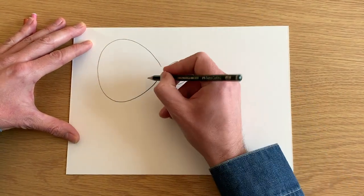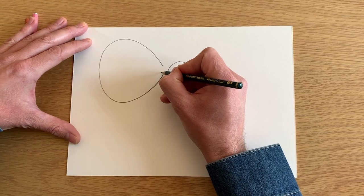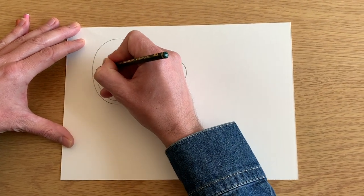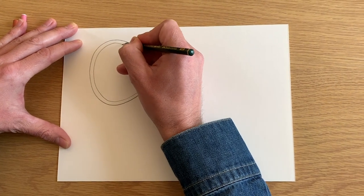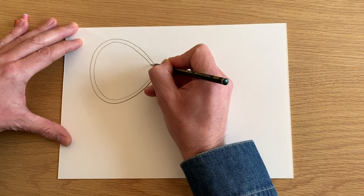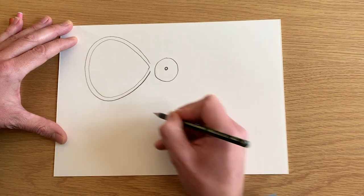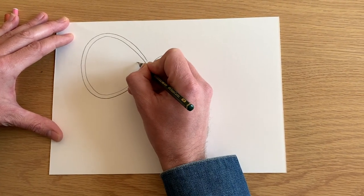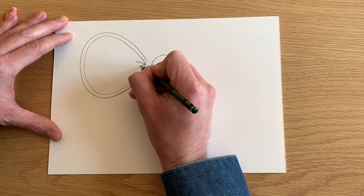And you're going to do the same again but make it a little bit smaller like this. You see that? And then inside the ear you're going to put a kind of V shape on the side like that.